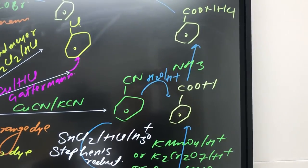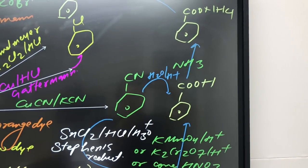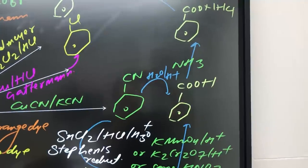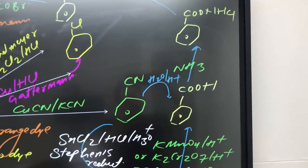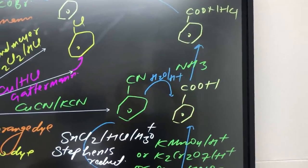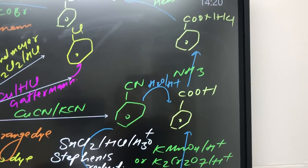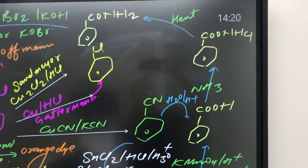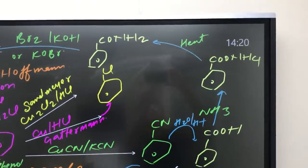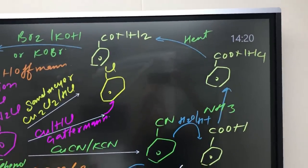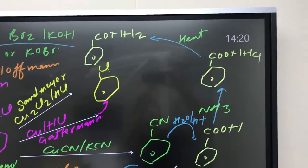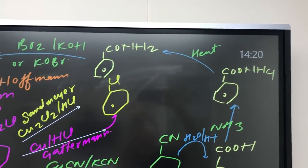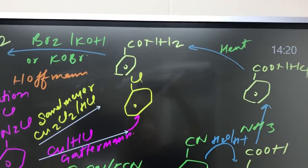Now benzaldehyde to benzoic acid. Now benzoic acid on reaction with ammonia, this is acid-base neutralization reaction. So this benzoic acid on reaction with ammonia, because ammonia is base on reaction with benzoic acid, it will convert into ammonium benzoate. This is salt, and salt requires to further release water. So on heating it will eliminate out water and you will get benzamide, C6H5CONH2.